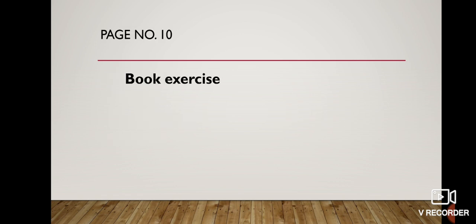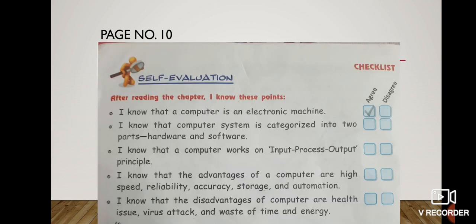Now on page number ten we have book exercise for lesson number one. Children, first there are some statements written and after each statement you can see two boxes. One is for agree and other one is for disagree. What you have to do is read the statement first and then tick on one of the given boxes.